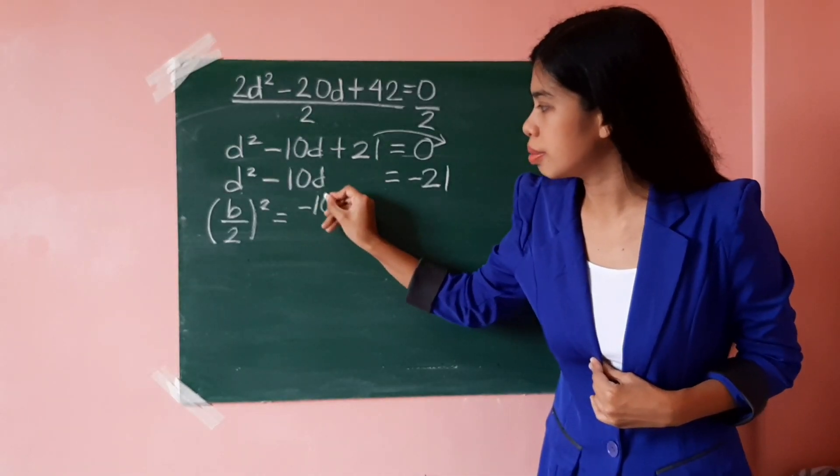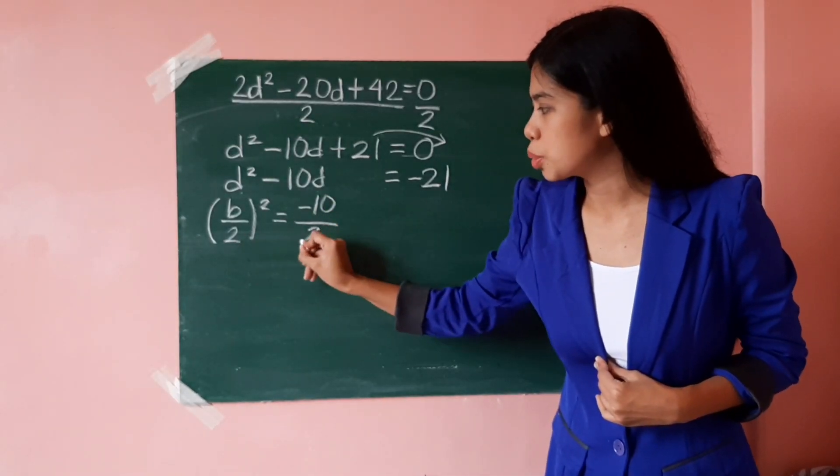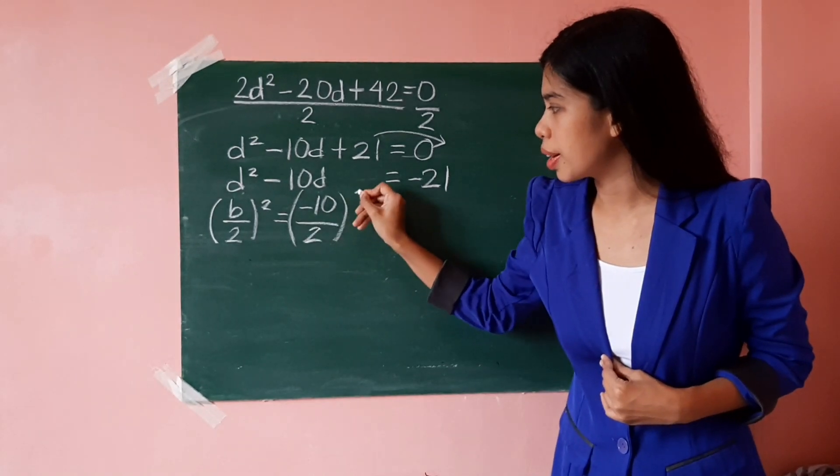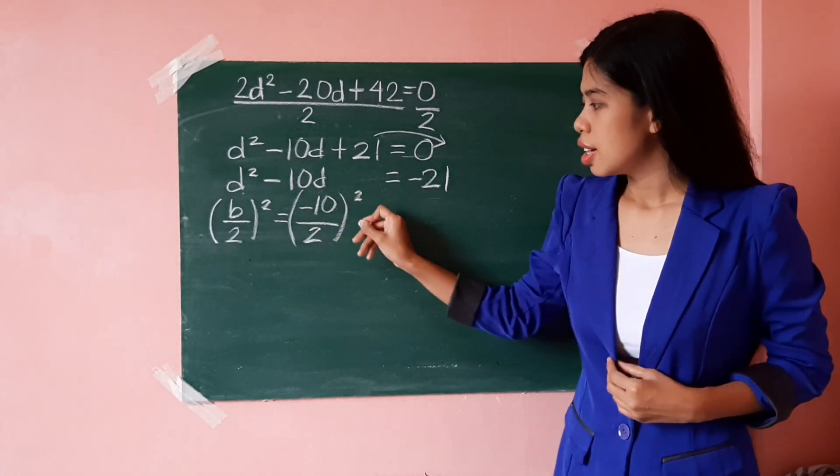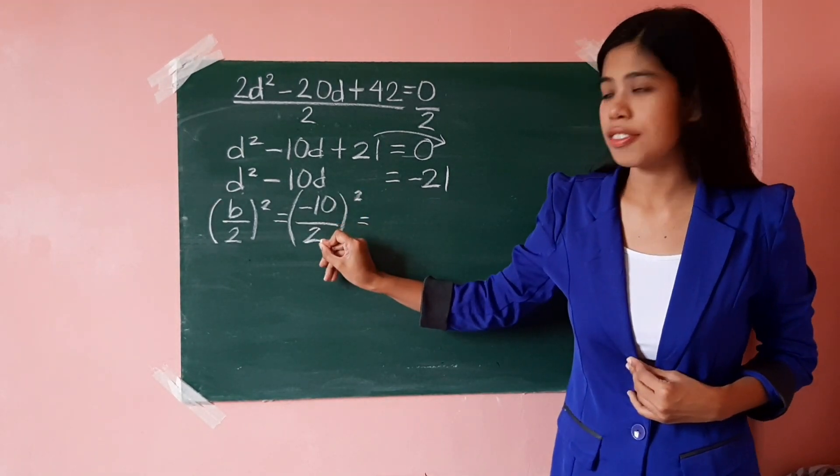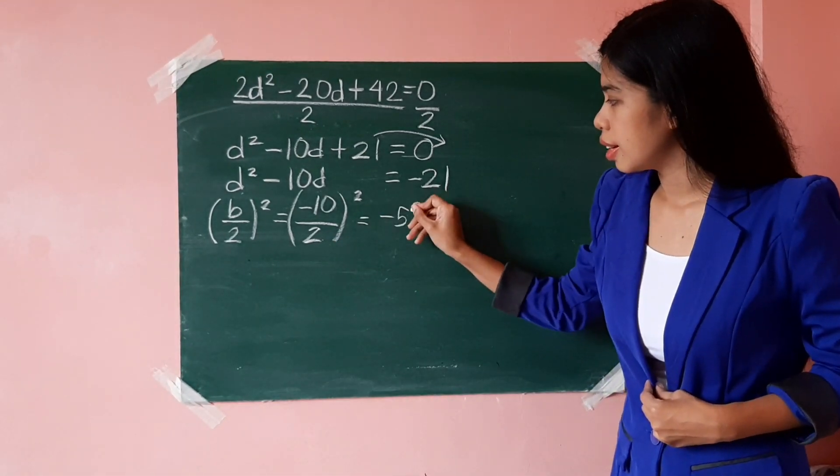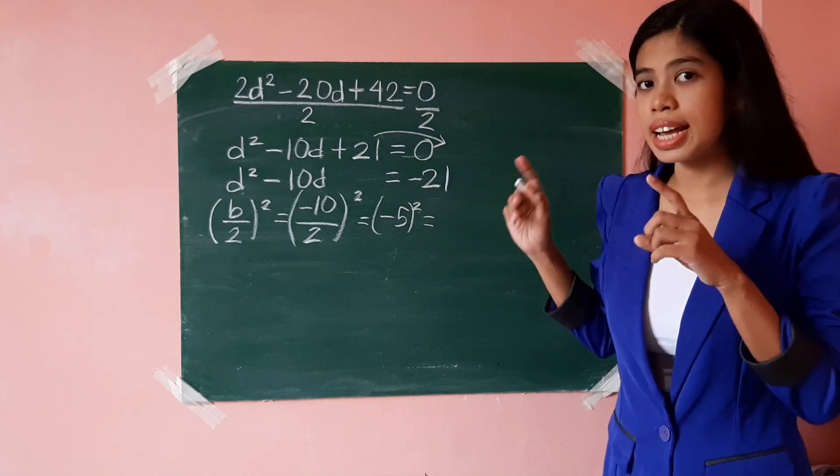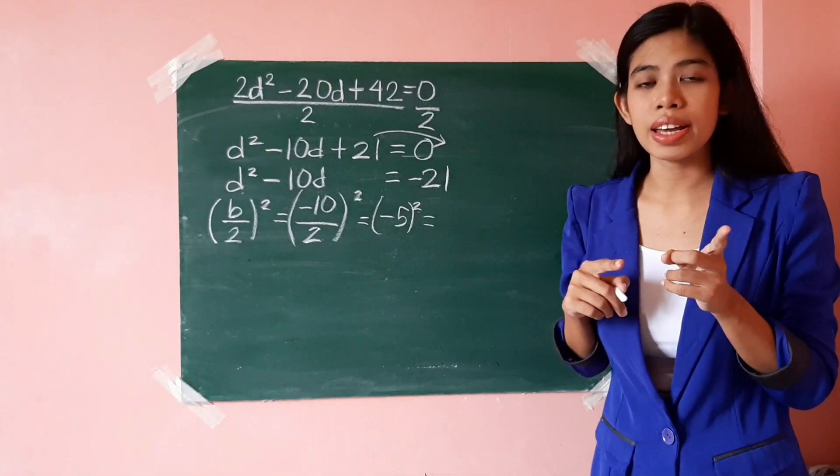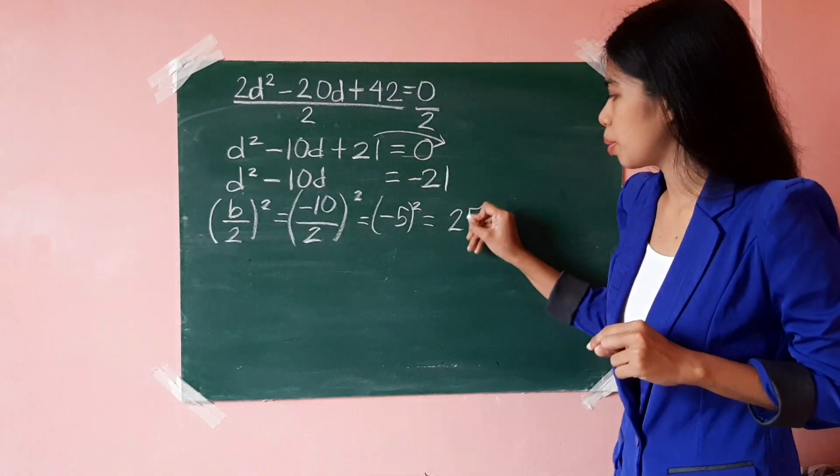So, that's negative 10 divided by 2, then square the answer. So, that's negative 10 divided by 2, it's negative 5. And negative 5 squared means negative 5 times another negative 5, it's positive 25.